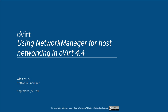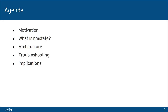Moving on to the talk itself. The first topic covers what was the motivation behind this change. In the second, I will touch the topic of NMState to give you an idea what it is. After that, I will try to briefly explain the current architecture. Then we will move to some basic troubleshooting that can be done in case of failure. And finally, closing it with some implications for oVirt users.